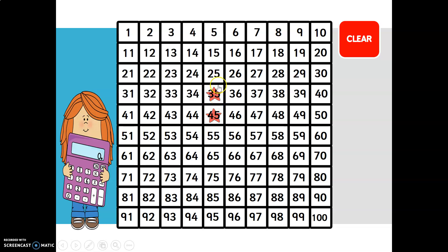45 take away 10 is 35, and that's just by jumping up a row. If I move down a row, if I move down a row just below 45, I'm adding 10 units. Let's check.